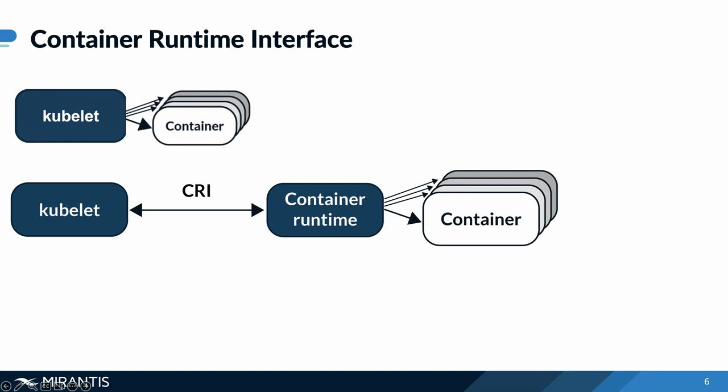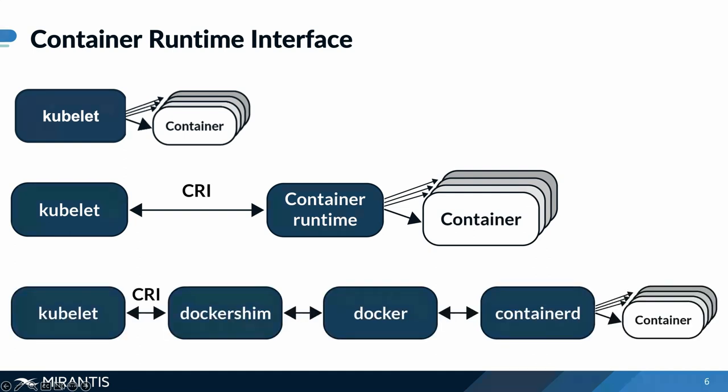Once the Kubernetes system moved to use the CRI abstraction layer, there was a slight complication because the Docker engine predated the CRI — or even Kubernetes for that matter — so it won't conform to the CRI standards. In order to solve that problem, the project added a new component called Docker shim that would act as an adapter between the CRI and the Docker engine.